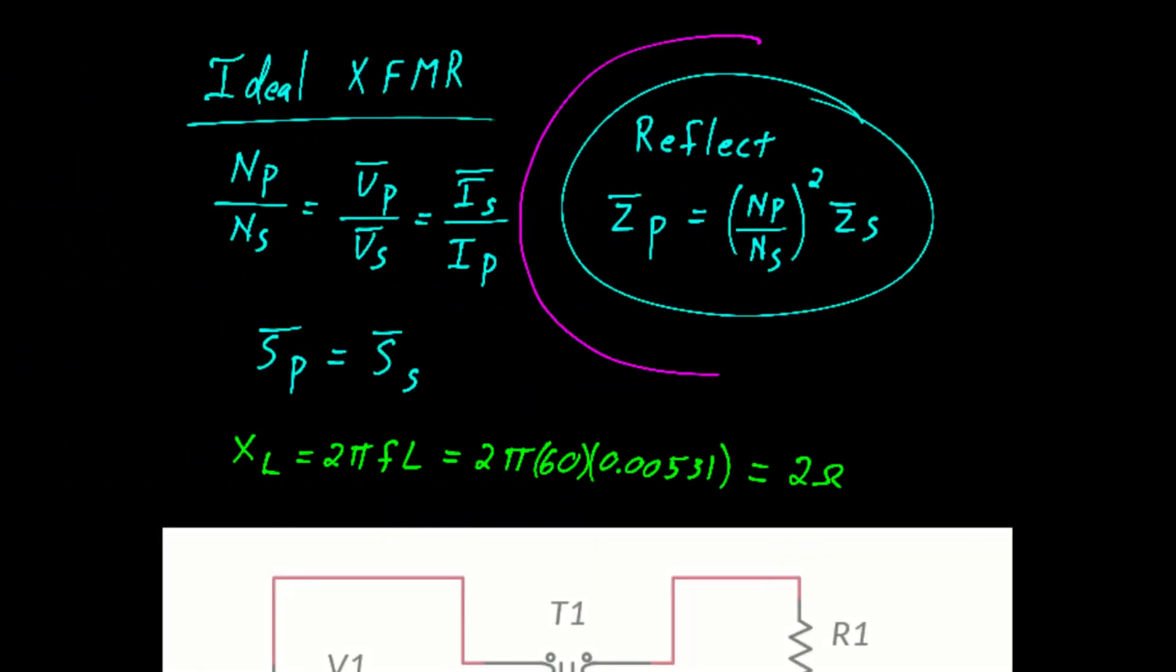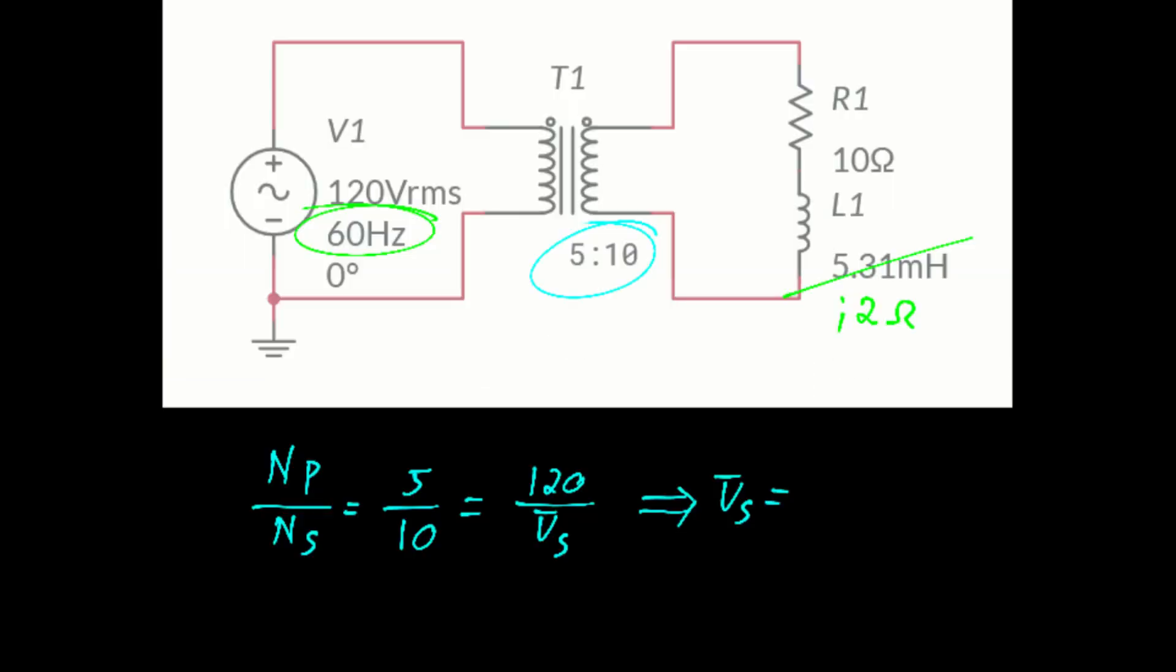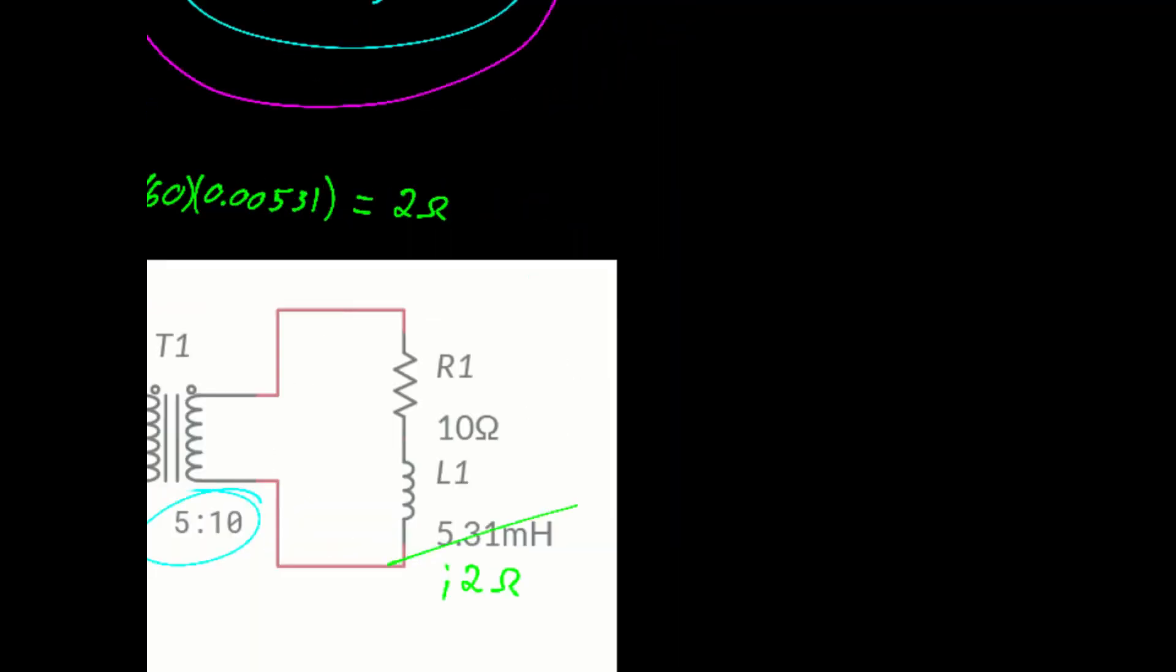Now I mentioned this reflection property, and I want to show you how that could save you a little bit of time in this particular calculation. Now remember, we're going to reflect that 10 plus j2 across the transformer. The impedance on the primary becomes the turns ratio squared multiplied by 10 plus j2, which gives us 2.5 plus j0.5.